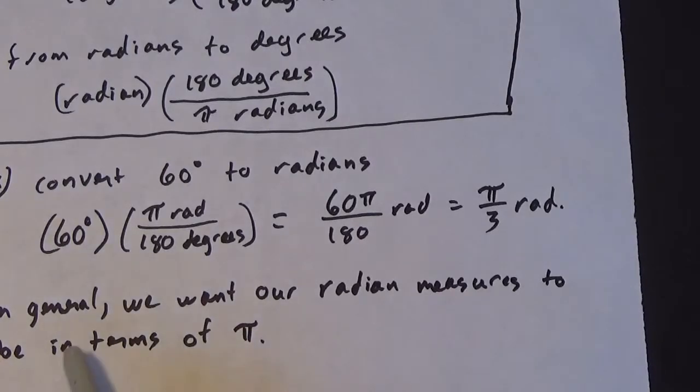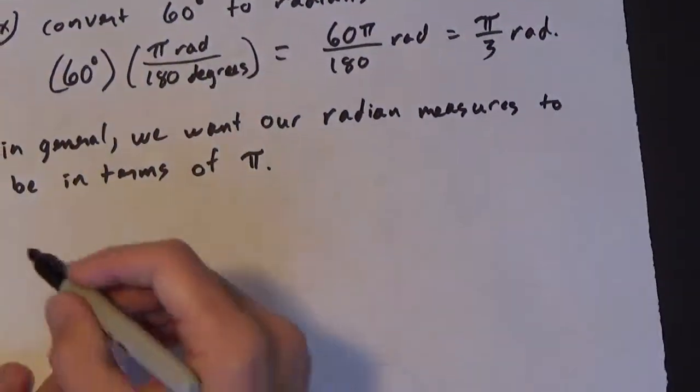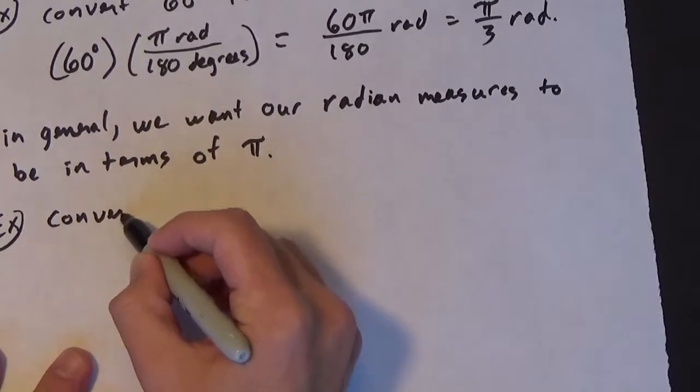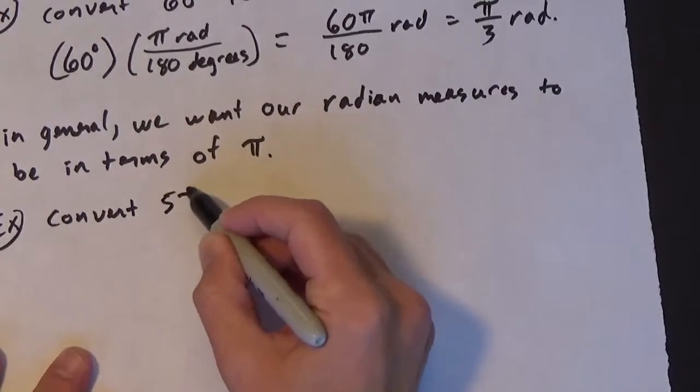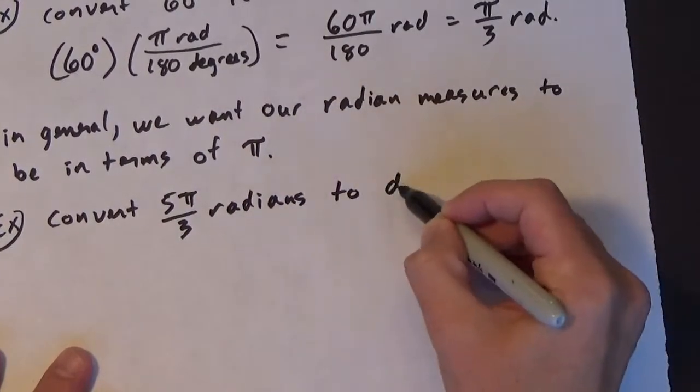But again, if possible, in general, we want that to happen. All right, let's try another one here. Let's say we want to convert 5 pi over 3 radians to degrees.